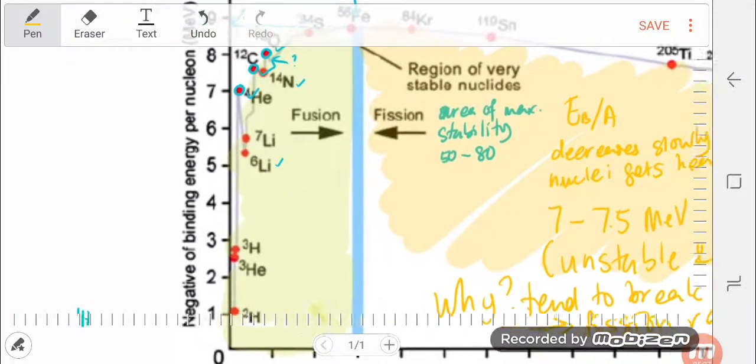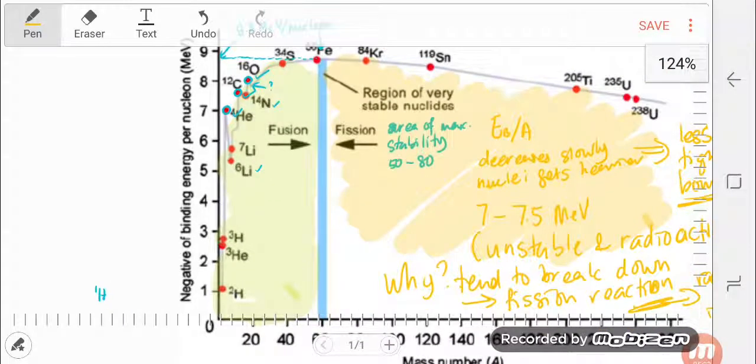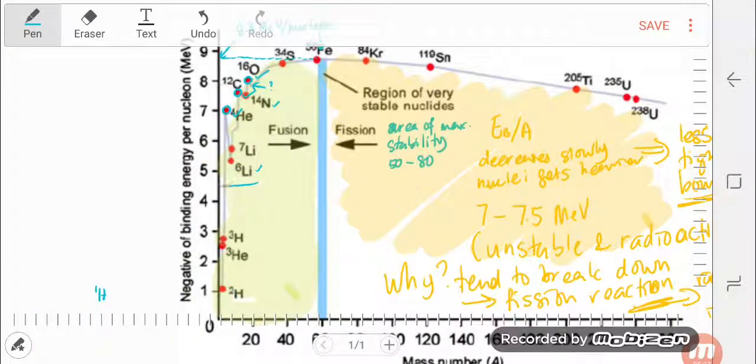If the yellow region here, the unstable big nucleus are unstable, what happened, what kind of reaction occur for the light nuclei? So for this area, they tend to undergo fusion reaction.